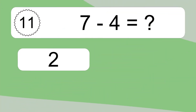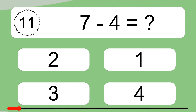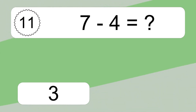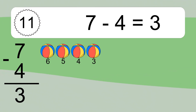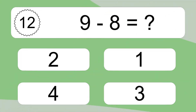7 minus 4 equals what? 7 minus 4 equals 3. Let's count it: 6, 5, 4, 3.